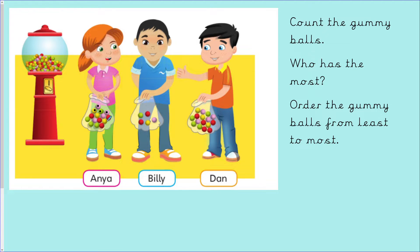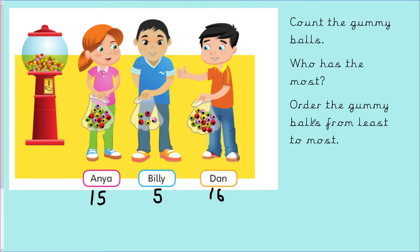1, 2, 3, 4, 5, 6, 7, 8, 9, 10, 11, 12, 13, 14, 15 — Anya has 15 gummy balls altogether. Let's count how many gummy balls Billy has: 1, 2, 3, 4, 5 — Billy has 5 gummy balls. Now let's count Dan's gummy balls: 1, 2, 3, 4, 5, 6, 7, 8, 9, 10, 11, 12, 13, 14, 15, 16 — Dan has 16 gummy balls.